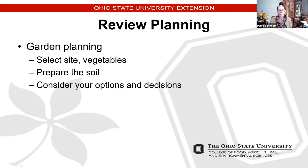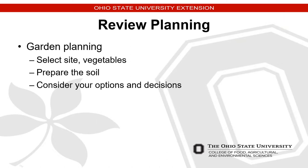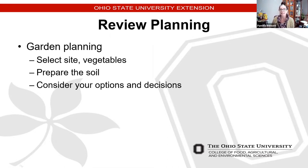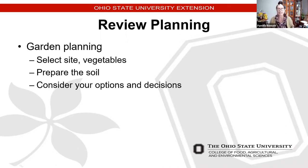We're going to start with a brief review of our last session on planning. You can still do some garden planning — it's not too late. Seed catalogs are still available and garden centers are just getting stocked up. Last time we talked about site selection, what to grow for your family, preparing the soil, and thinking about your options and decisions regarding a vegetable garden. The YouTube video will be available in a few weeks — we have to prepare it — but in the meantime, Leo sent a link to the recording you can review.